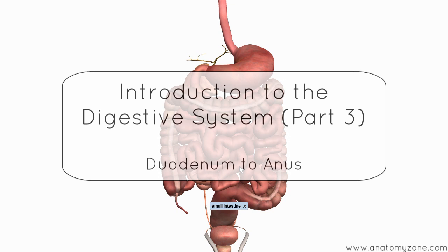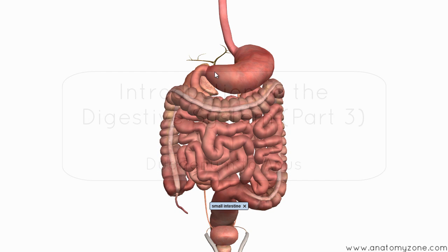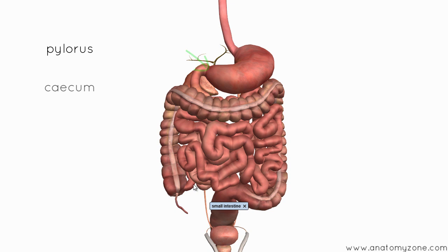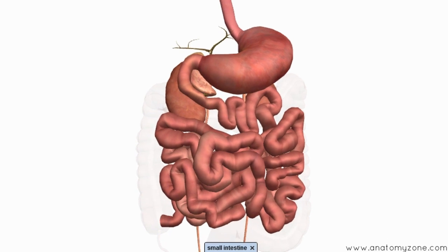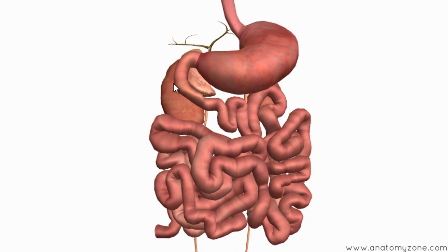After the partially digested food, known as chyme, exits the stomach, it enters into the small intestine. The small intestine extends from the pylorus of the stomach all the way to the cecum, which is this little pouch at the beginning of the large intestine. You can see how it's this long convoluted tube.